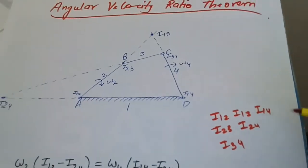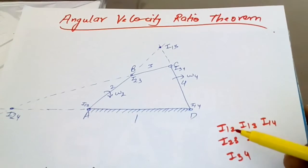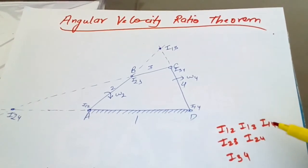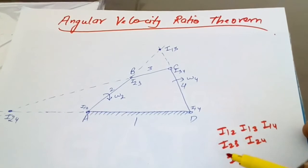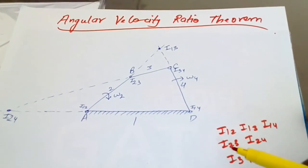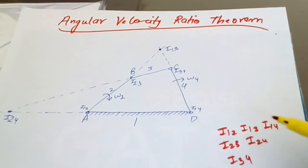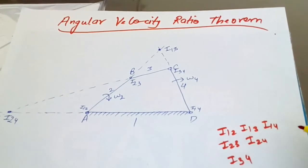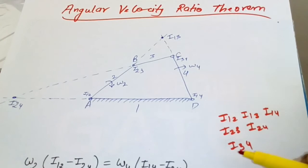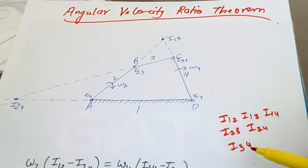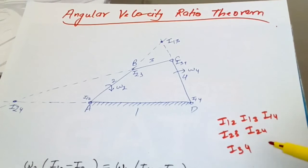Here is a trick for listing the I-centers. First write i1, then the remaining link numbers: i12, i13, i14 — that gives 3. In the next line write i2, then the remaining links after 2: i23, i24. If there were 5 links you would also write i25. Finally write i34. If there are more links, you continue with i35, i36, and so on.